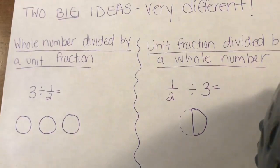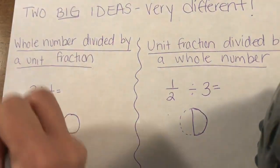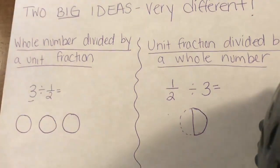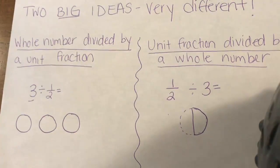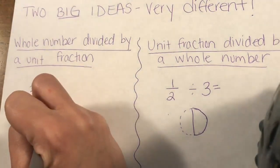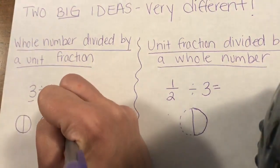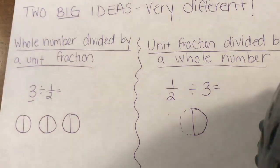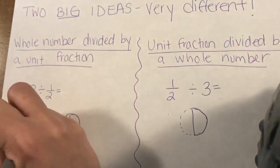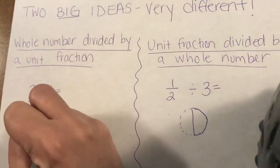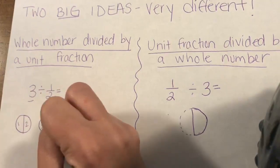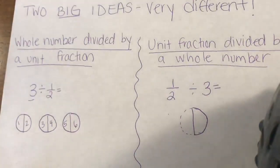First, we've got a whole number divided by a unit fraction. Since I'm starting with three, three is my thing that is getting divided. When I start to draw my model, I'm going to start with three wholes because that's what I have. Dividing it into a half means I'm dividing it into half-sized pieces, so each of these is getting cut in half. We're trying to see how many pieces did we make — and we've got six pieces.